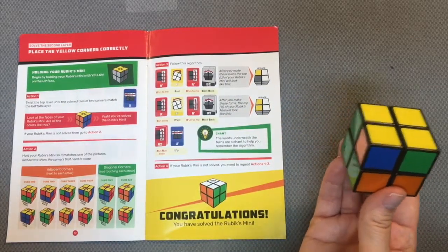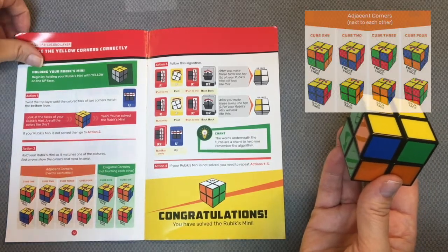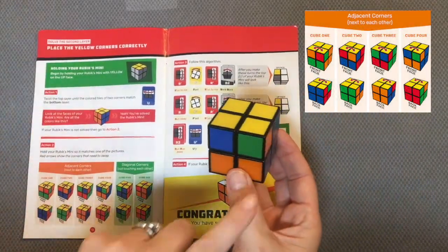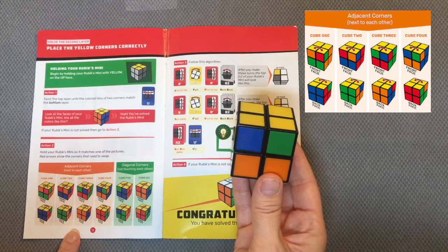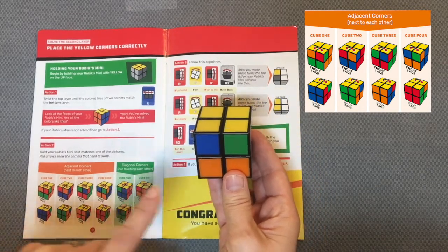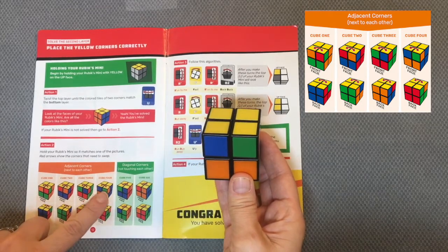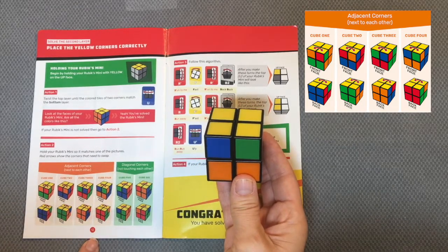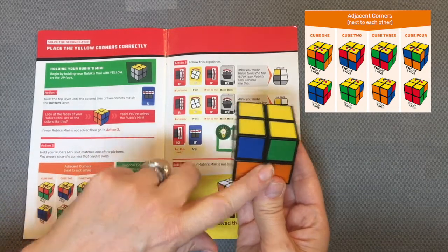And in order to solve this, I need to do some pattern matching again. So if I come over here, I notice I have two orange on the bottom, so I'm going to look for two orange on the bottom, right there. I'm cube 4, because I have blue and green, and these need to change location. So I now know that this is my front face with the orange.